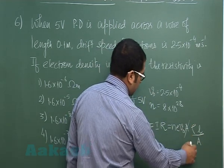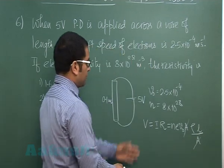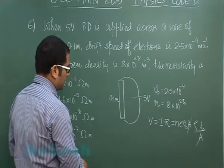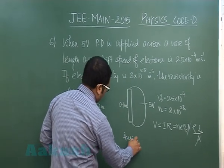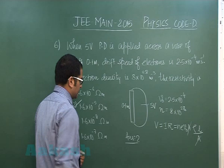The area had not been given but that gets cancelled out and now plugging all those values you would land up to option number two. So the correct option for this question is option number two.